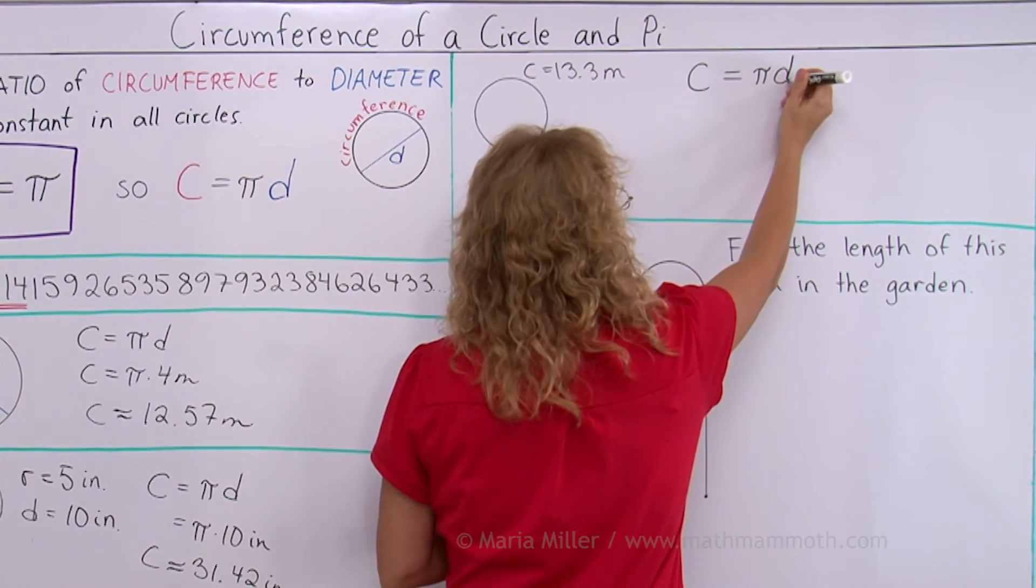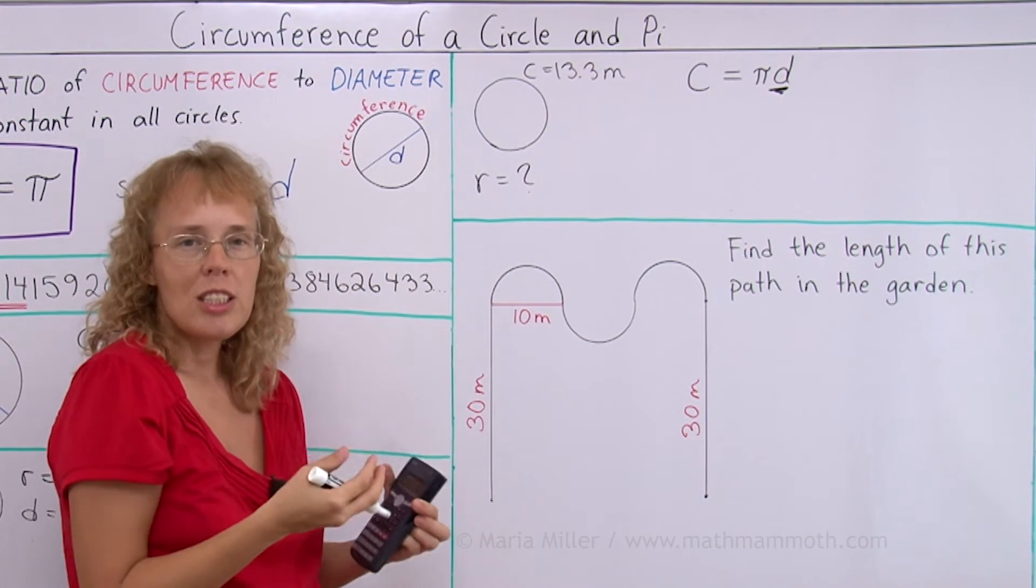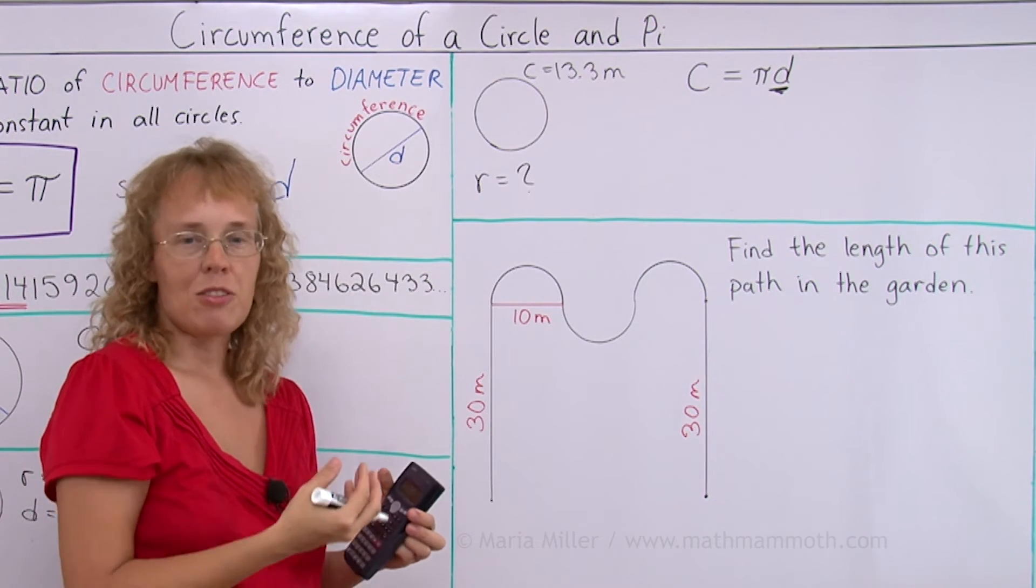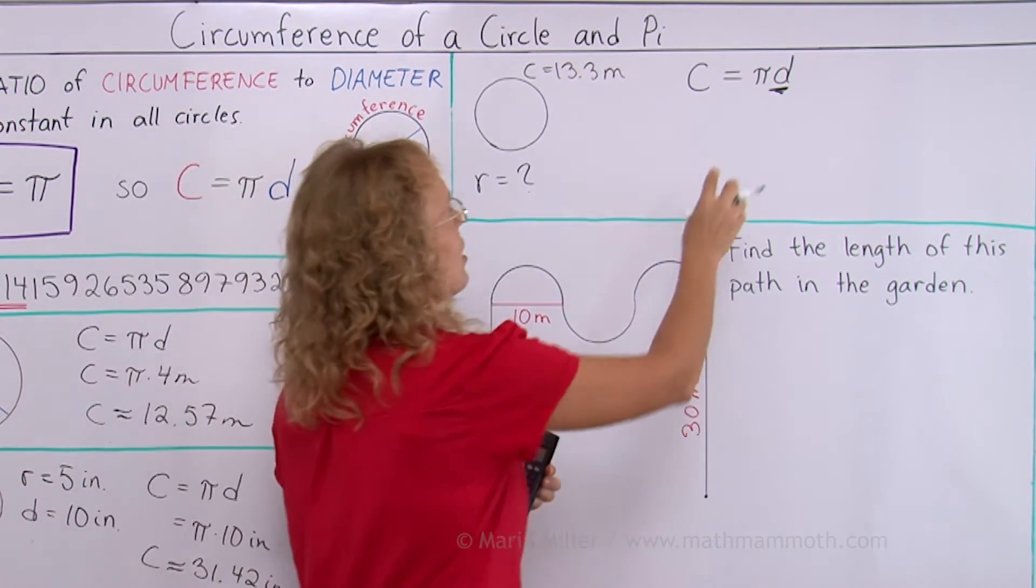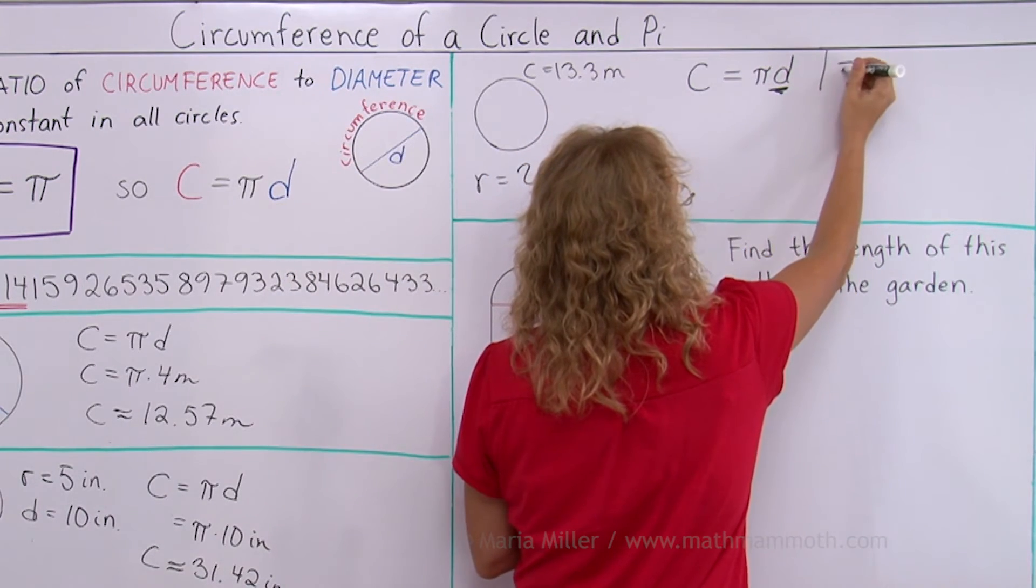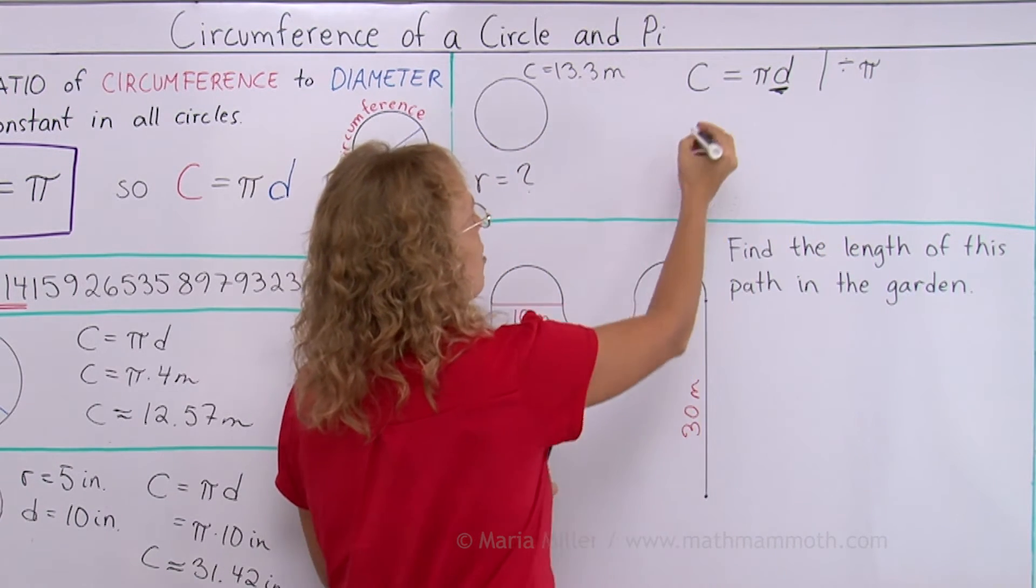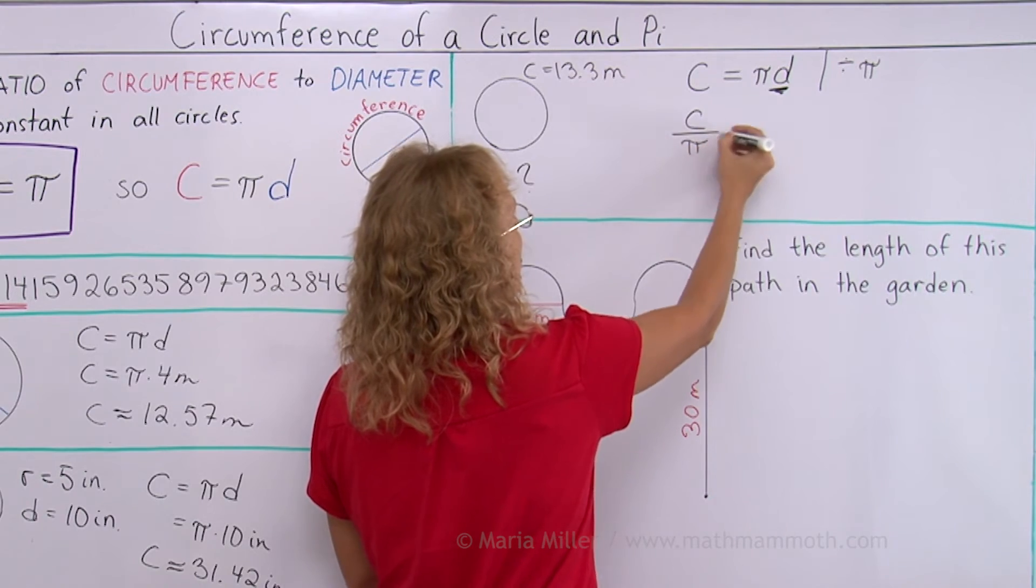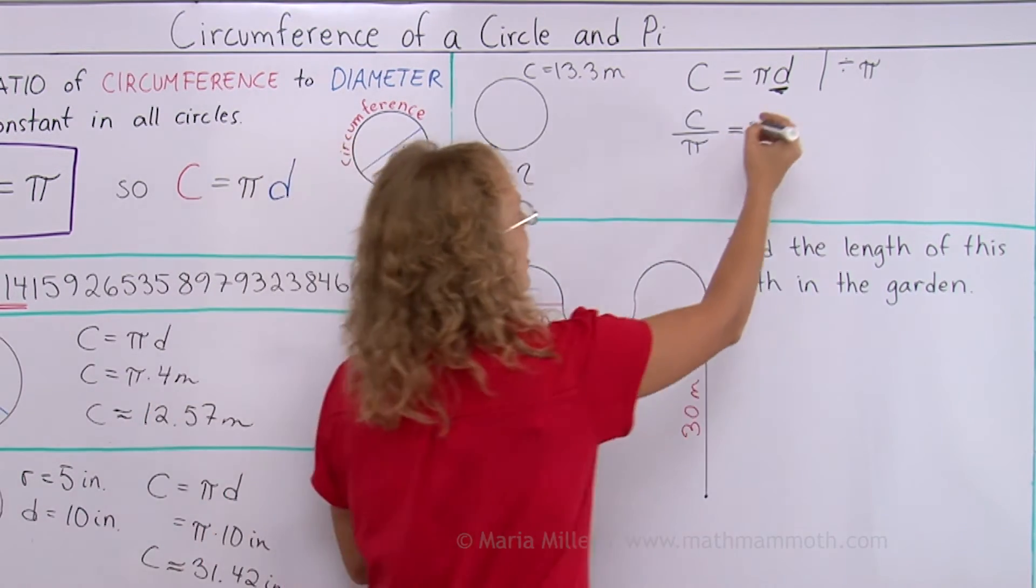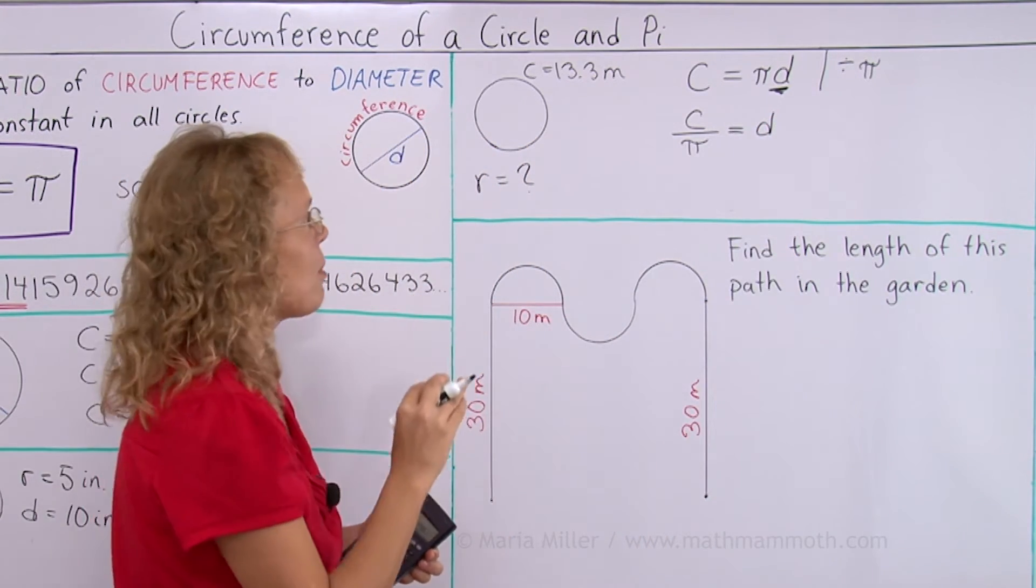So to solve this for D, you have to think of D as being your unknown. You're solving an equation. D is an unknown. What do you do to this equation? You want to isolate the unknown, right? And the unknown is multiplied by a number. So now you need to divide both sides by this number here, by pi. And so then you will get C divided by pi on one side. On this side then the pi's will cancel out and you will get D. So the diameter is circumference divided by pi.